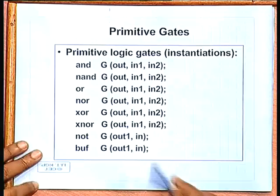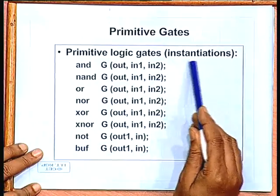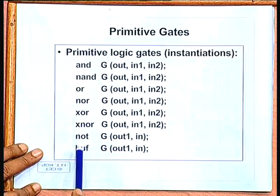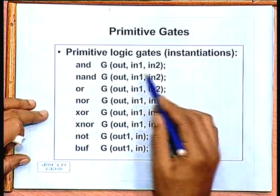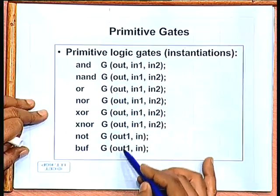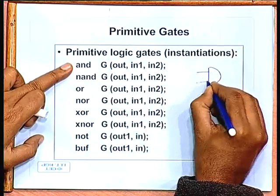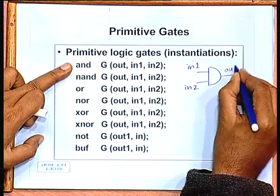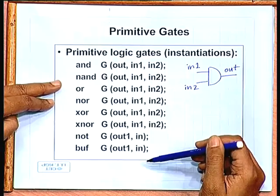The primitive logic gates supported in Verilog are: AND, NAND, OR, XOR, NOR, XNOR, NOT, and BUFFER. A buffer is like a driver — it does not invert the logic value. The convention is that the first parameter is the output, and the next parameters are the inputs. For example, in the first case inputs are IN1 and IN2, and the output is OUT. You can have all basic gate types available as part of the language.